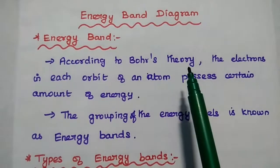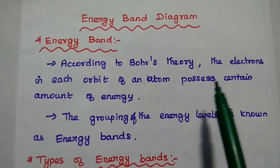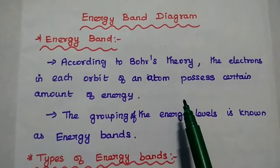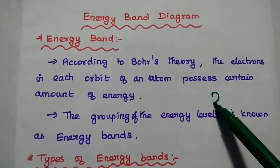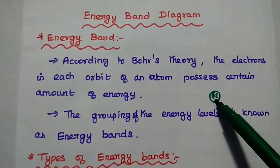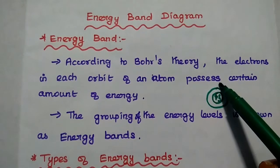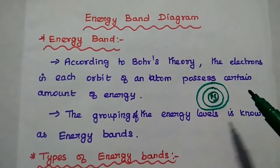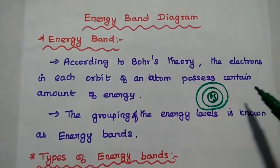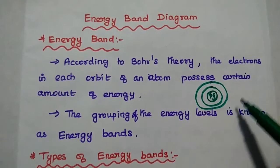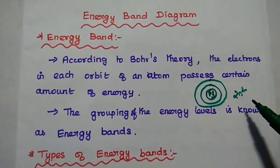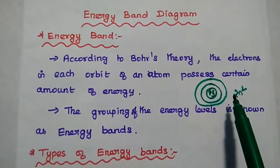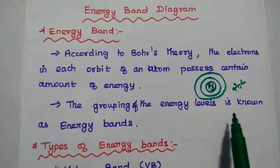According to Bohr's theory, the electrons in each orbit of an atom possess a certain amount of energy. The atomic structure has its own number of orbits or shells. This is the nucleus, which consists of protons and neutrons, and the electrons are moving around this nucleus in the orbits. Each orbit contains its own fixed number of electrons. The maximum number of electrons present in that orbit is 2n squared. The electrons in each orbit constitute a certain amount of energy.